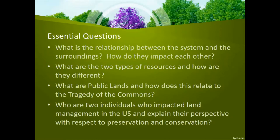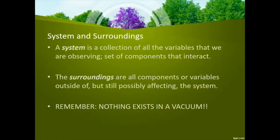Let's start by taking a look at this concept of system and surroundings. A system is a collection of all the variables that we are observing — a set of components that interact in what we would consider a closed unit. The surroundings are all the components or variables that are outside of that unit, but they can still possibly affect the system, and often do.